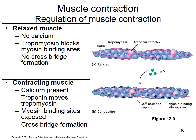Postural muscles that keep you sitting up have continued calcium release, meaning motor neurons continue to fire. As soon as the motor neuron stops firing, channels on the sarcoplasmic reticulum close, and the sarcoplasmic reticulum reabsorbs all the calcium, returning the muscle to its relaxed state.